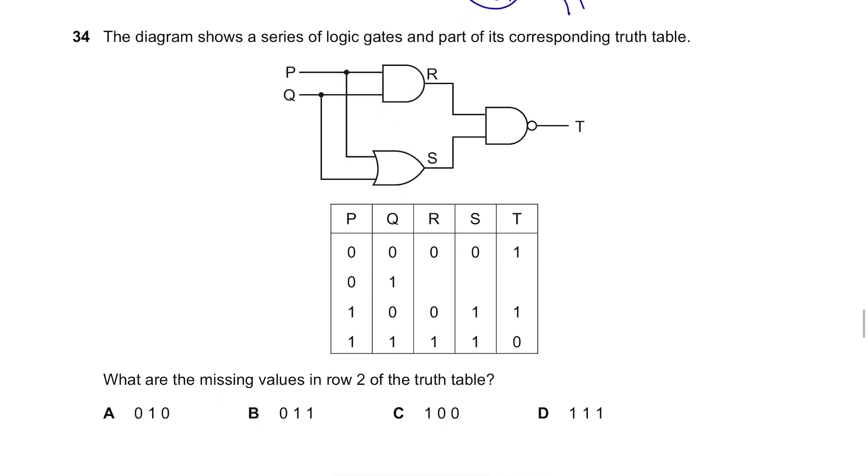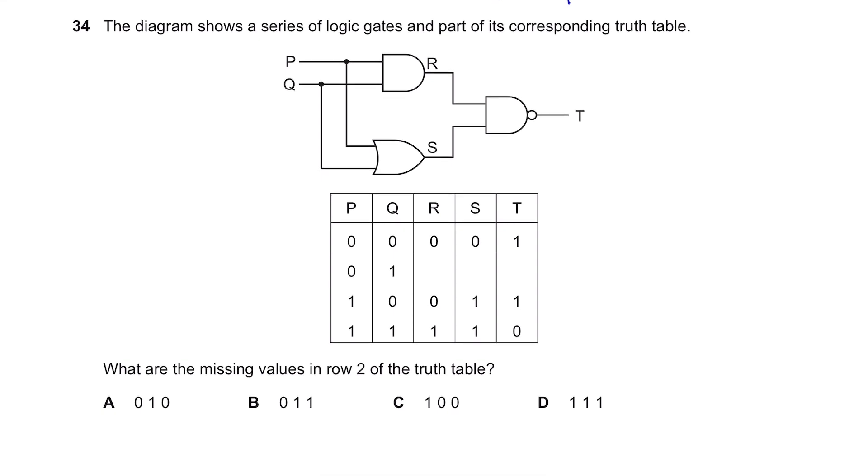Question 34. The diagram shows a series of logic gates in part of its corresponding truth table. We need to find these values. It's easier if we write this down on the diagram itself. If it starts at 0 and 1, okay, this is an AND gate. Therefore, your output will be 0. And this is 0, 1 again. And OR gate is here. So, the output will be 1. And then this is a NAND gate which is the opposite of an AND gate. So, the output will be 1. And we've got our answer. It's 0, 1, 1. The answer is B.